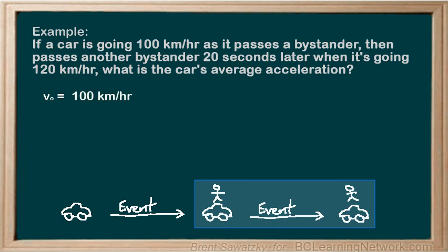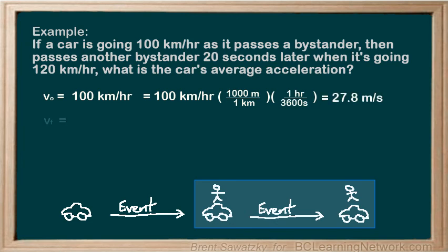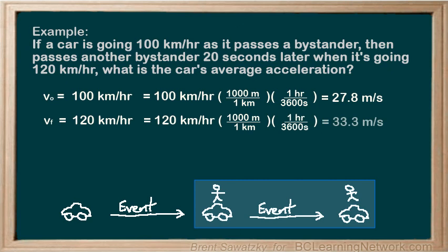While we're listing our variables, we might as well put them into our standard unit, so a quick conversion here and we're done. On to the next variable: VF, or our final velocity. Since our event ends with the passing of the second bystander, VF must be 120 kilometers per hour, and again we'll convert it into standard units. We also see that the time of the event is 20 seconds — that is, the time from when it passed the first bystander to when it passed the second.